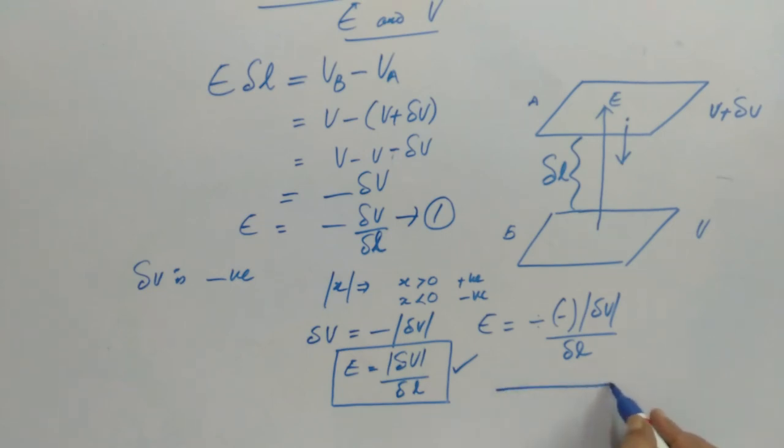That is, suppose if the potential is decreasing in this direction, then we can say that electric field will be in the same direction. Electric field is in the direction where the electric potential is getting decreased.